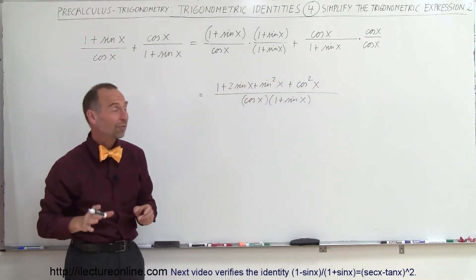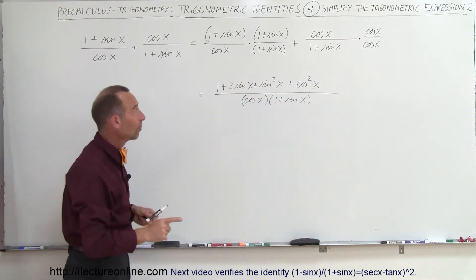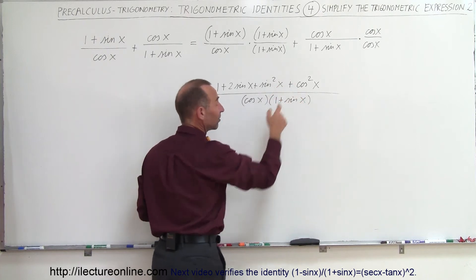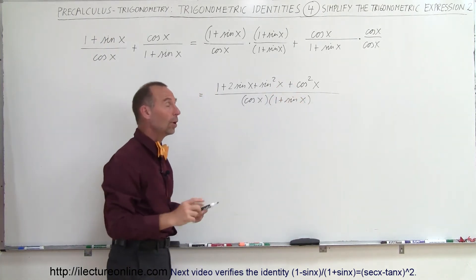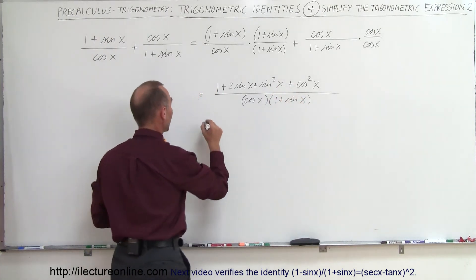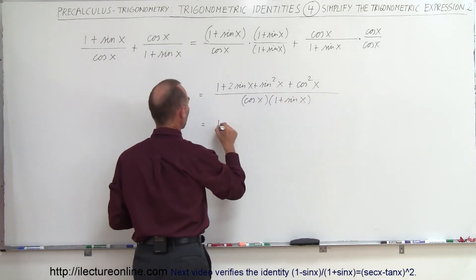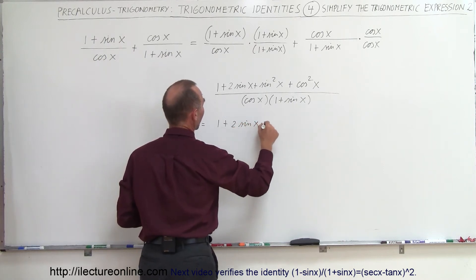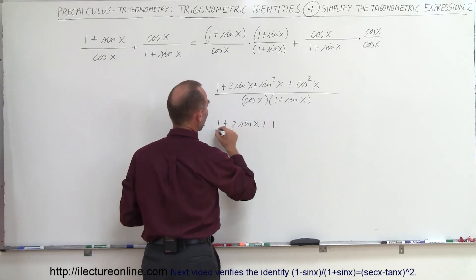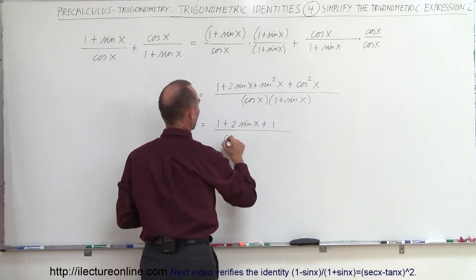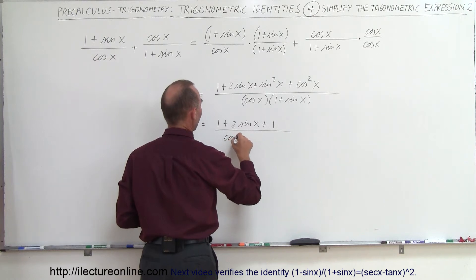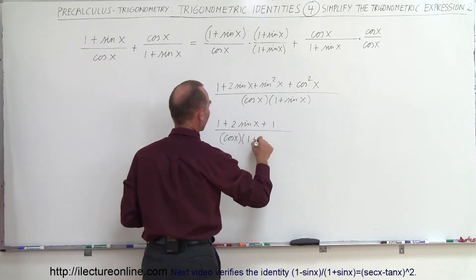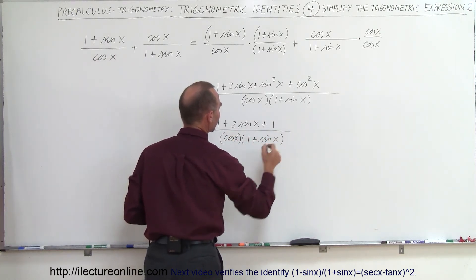Now we have to use some of our identities. Remember that sin²x + cos²x = 1, so the numerator can now be written as 1 + 2sin x + 1, all divided by cos x · (1 + sin x).